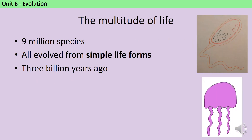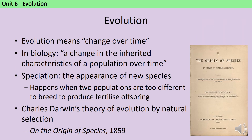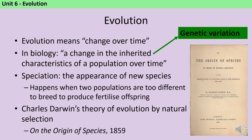The Earth today contains nearly 9 million different species, but when life first began all life forms were much more simple. All of the species that exist now have evolved over the last 3 billion years from these simple life forms. We call this gradual change over time evolution — and specifically in biology, evolution means a change in the inherited characteristics of a population over time. By inherited characteristics, we mean things encoded in genetic variation that can be passed on from one generation to another, not behavioural or cultural changes.